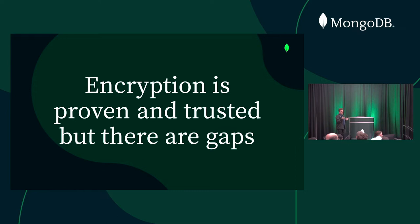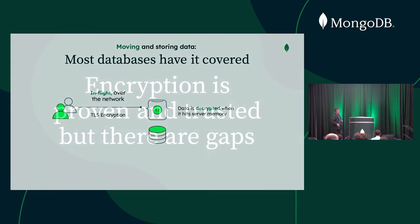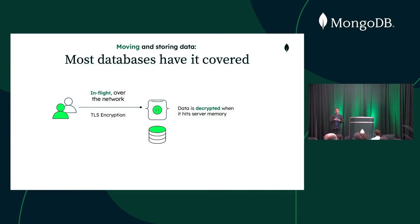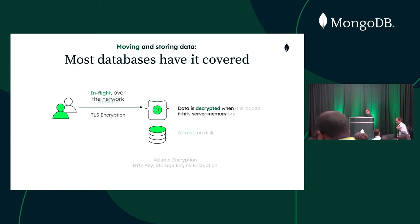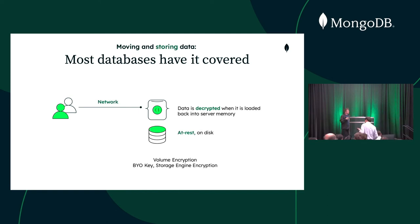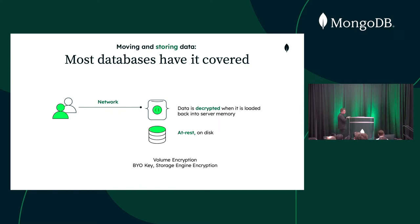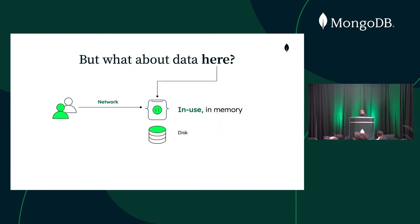Encryption is proven, but there are actual gaps. When you have data in transit, you encrypt that with TLS. But as soon as the data is loaded into memory, it's in clear text — when it's in use, it will be in clear text. When storing data at disk you probably have volume encryption or bring-your-own-key, but again as soon as you load the data into memory, it's in clear text.